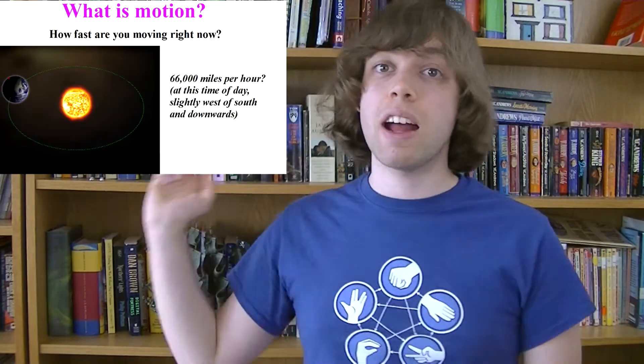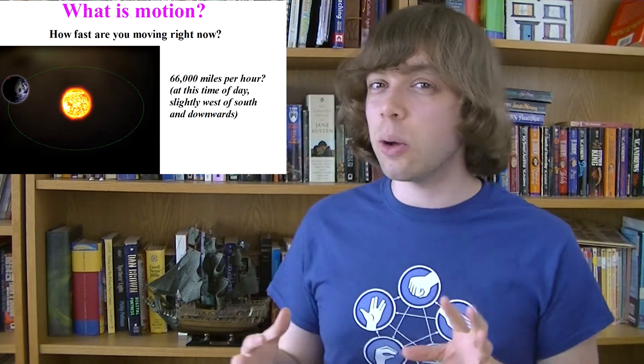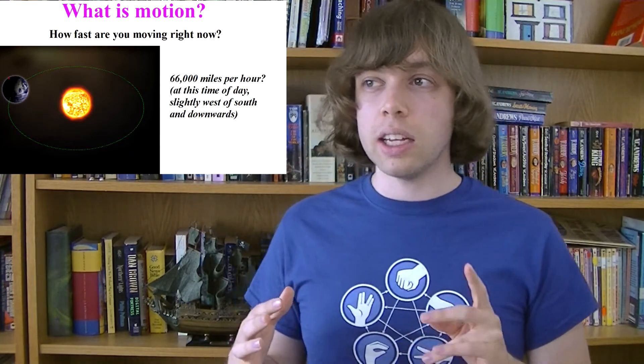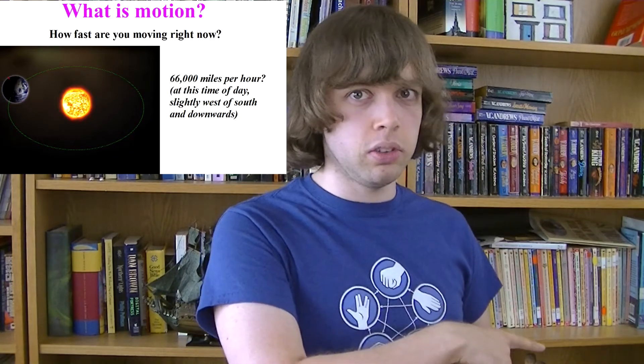Approximately that way. So I'm moving 770 miles per hour that way. More than that, the Earth is moving around the Sun. At this time of day, that means I'm moving at approximately 66,000 miles per hour, slightly west of south and a little downwards.